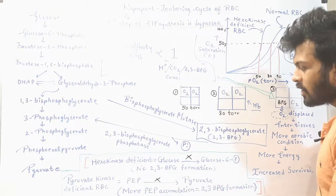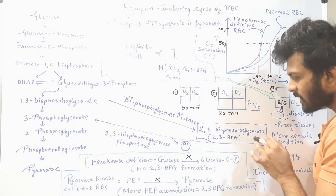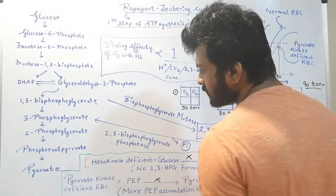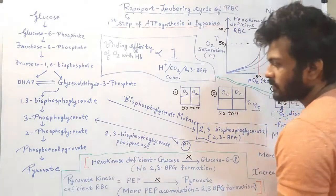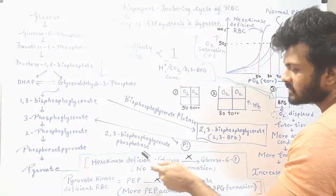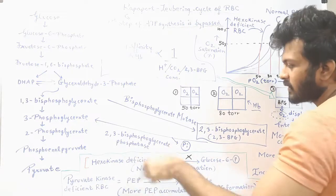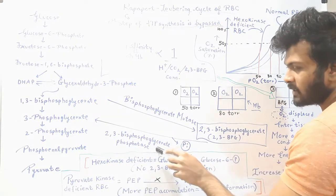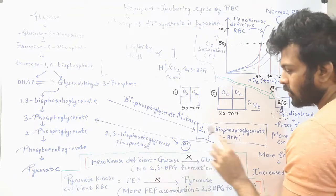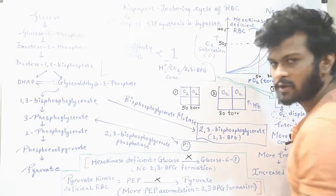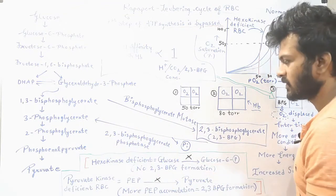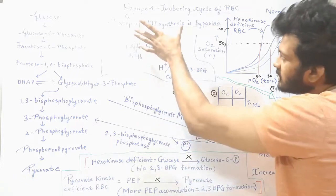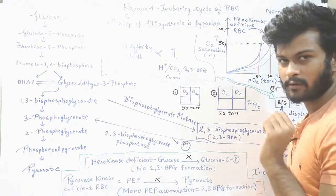2,3-BPG can again be converted into 3-phosphoglycerate by the enzyme 2,3-bisphosphoglycerate phosphatase, where a phosphate group is removed. So the first step of ATP synthesis — which normally converts 1,3-bisphosphoglycerate into 3-phosphoglycerate — is bypassed.